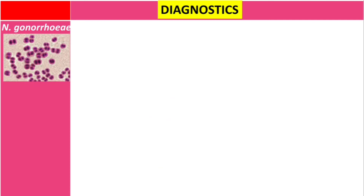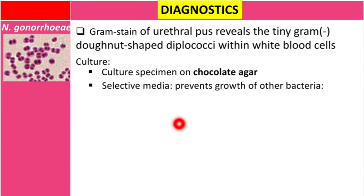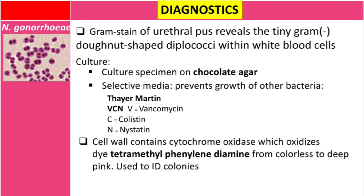Let's talk about diagnosis of gonorrhea. Gram staining of urethral discharge reveals tiny Gram-negative donut-shaped diplococci within white blood cells. The second method is culture — we take the specimen and place it in chocolate agar. There is also a selective media known as Thayer-Martin agar, or VCN agar, which prevents growth of other bacteria.